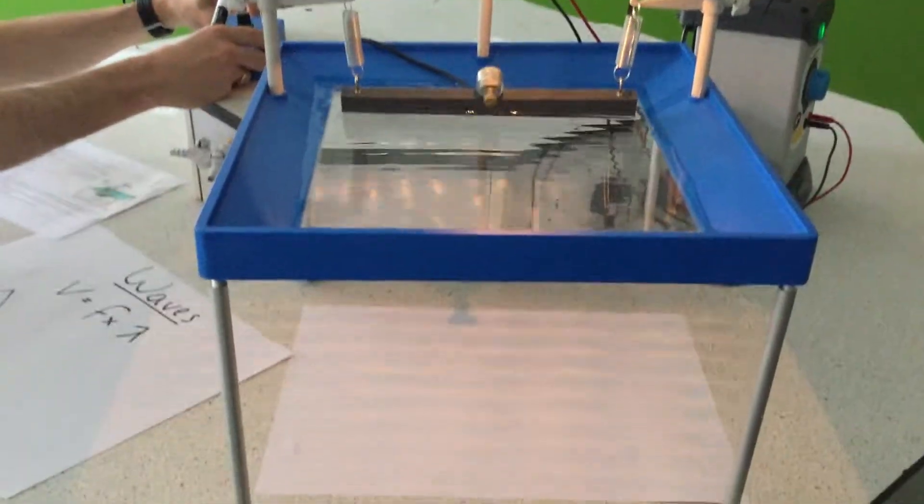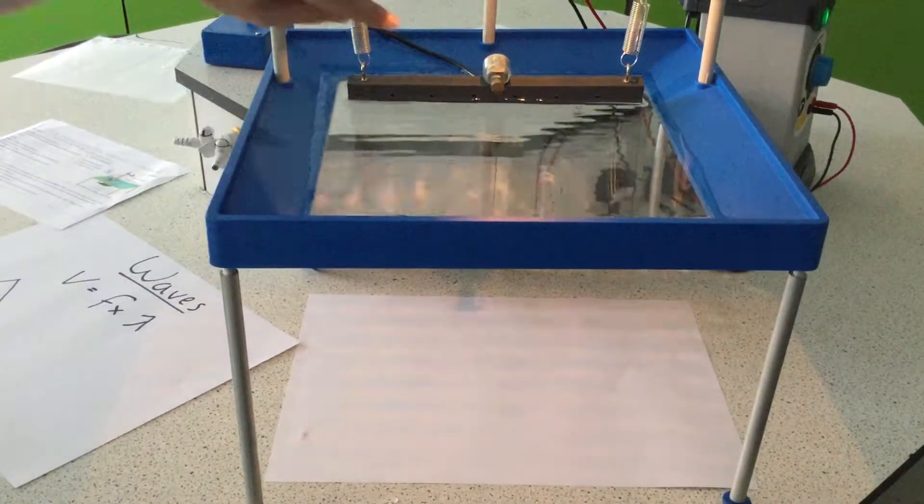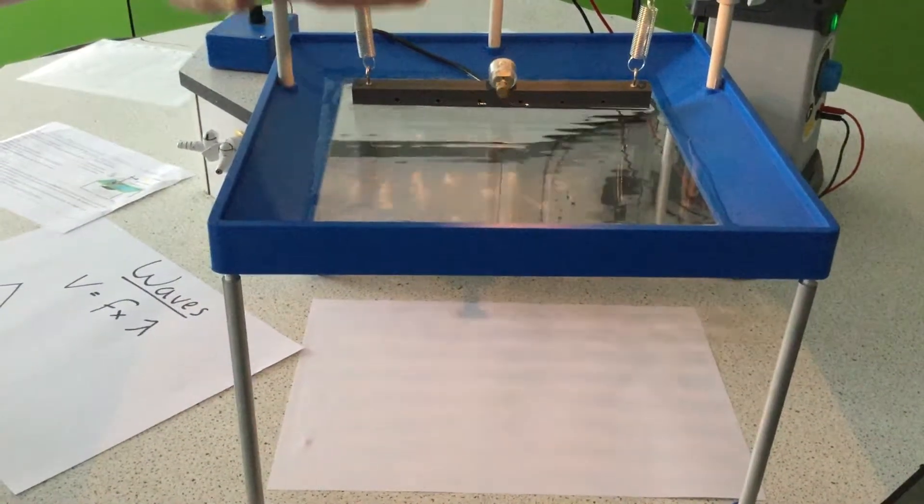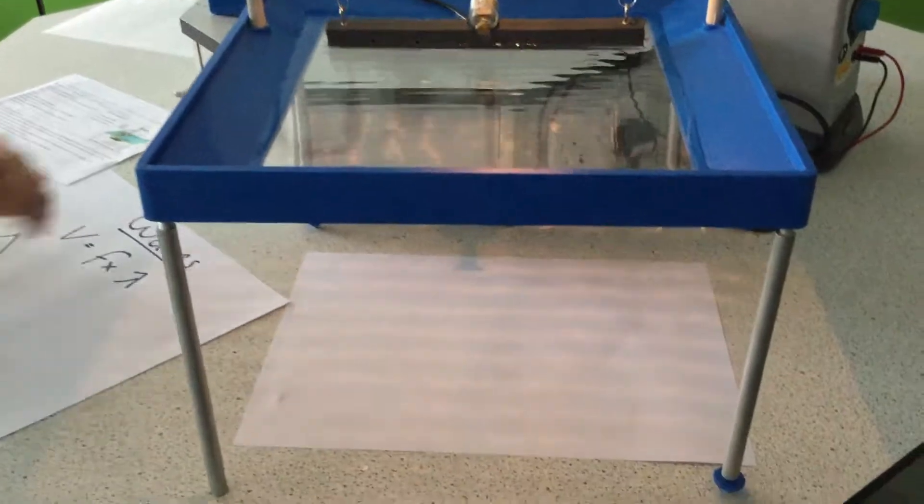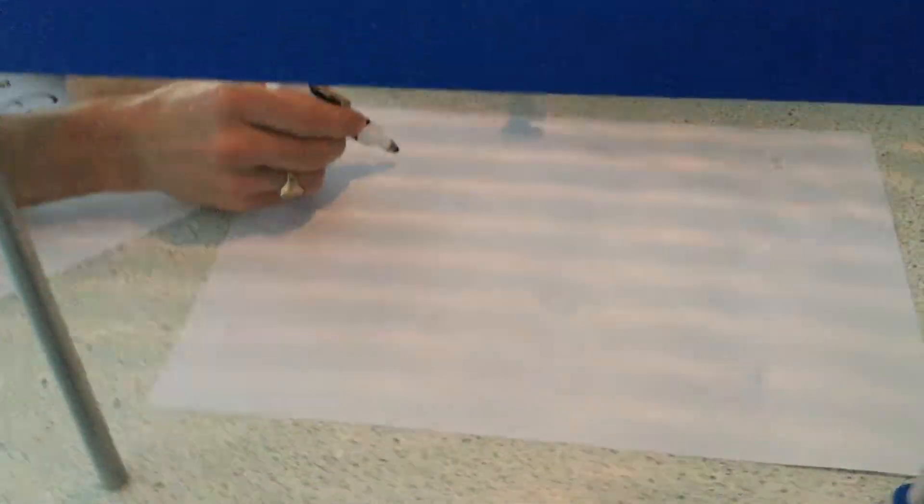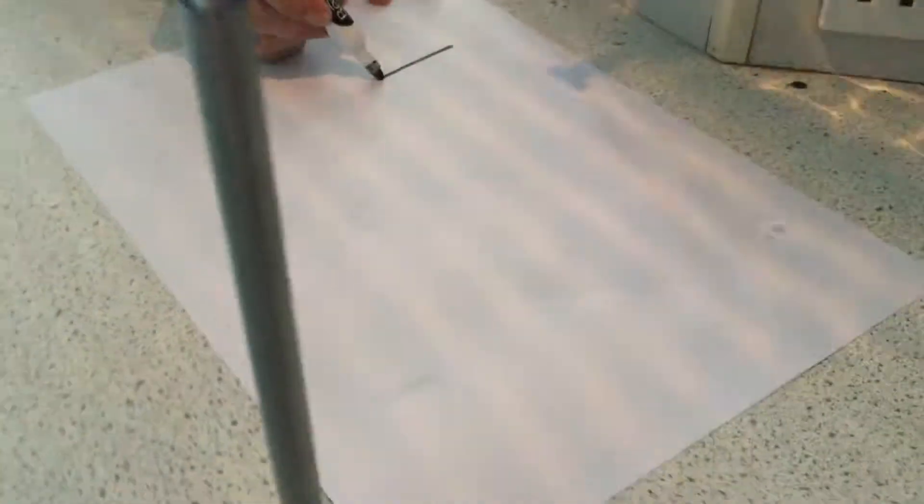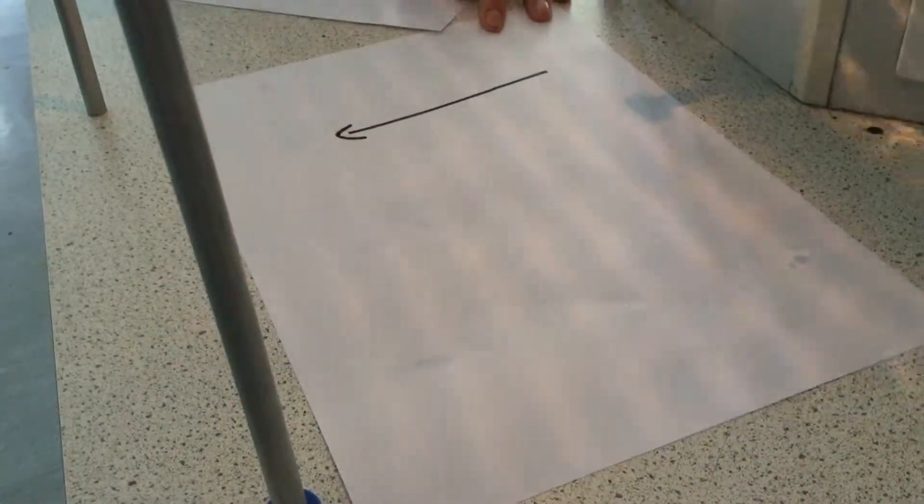What I'm going to do is put a little motor on here and when the motor spins it makes my little bar vibrate up and down. So rather than just getting one wave that you saw just now, I've now got lots of them and you can see clearly on the paper here that the waves are traveling from the bar across the paper.